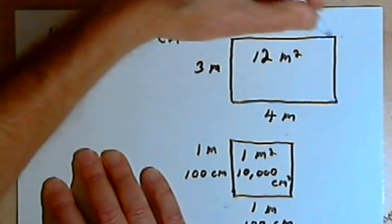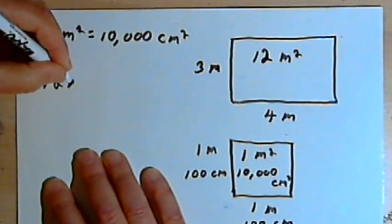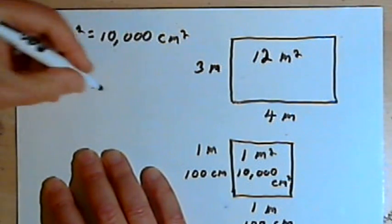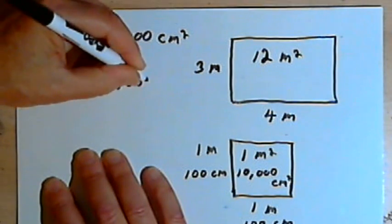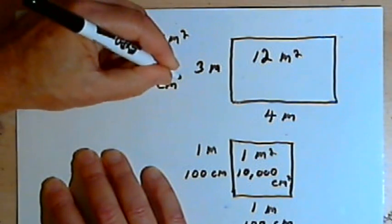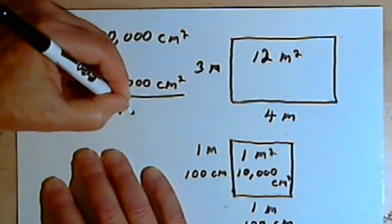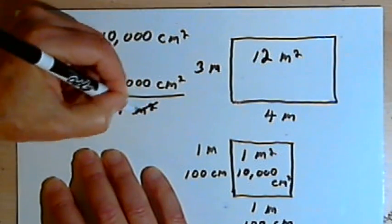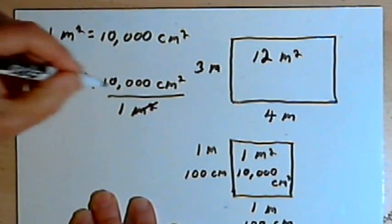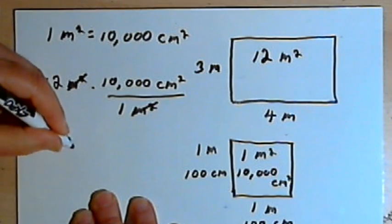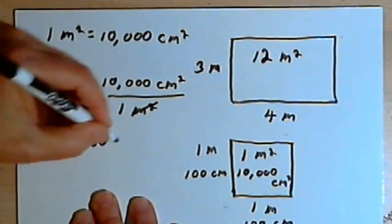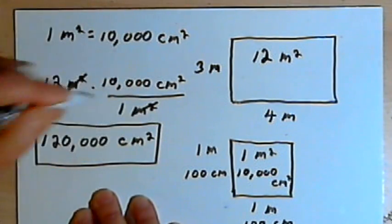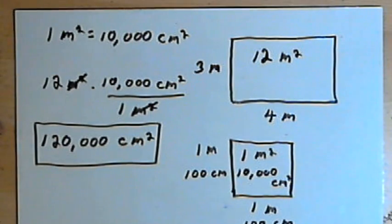Now I'll take the area of the rectangle, which was 12 square meters, and multiply it by my fraction equal to 1: 10,000 square centimeters over 1 square meter. The square meters will cancel out, and I just have to multiply 12 times 10,000. That's going to be 120,000 square centimeters. I hope this helps — take care, I'll see you next time.